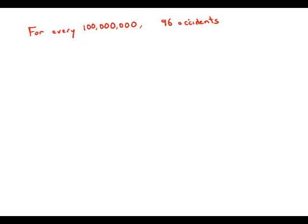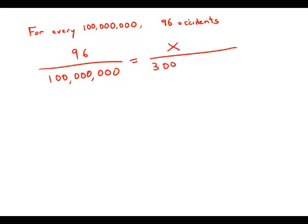So they're asking us to set up a proportion here. 96 over 100 million, that's a 1 followed by 8 zeros, equals x, the thing that we're looking for, how many accidents, over 3 billion. That is a 3 followed by 9 zeros.